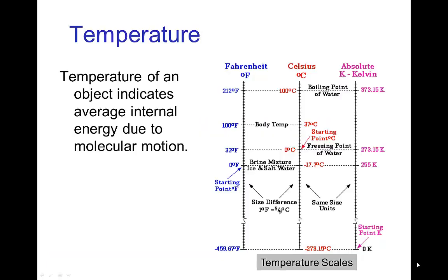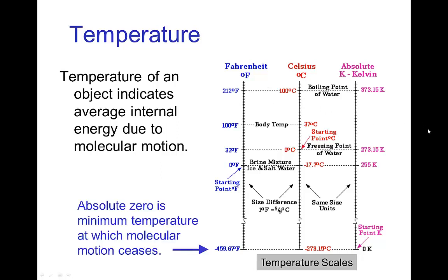Temperature for an object indicates the amount of energy the object has due to the random motion of the molecules. We have different scales for measuring temperature. In the U.S., the Fahrenheit scale; pretty much everywhere else, the Celsius scale. And scientists also use the Kelvin scale.